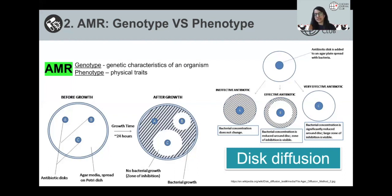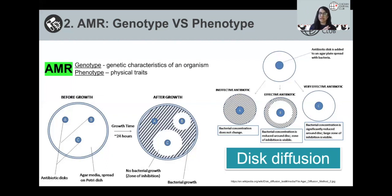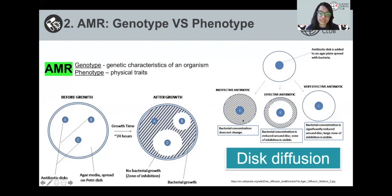The two main testing methods are: first, MIC, or minimum inhibitory concentration — the lowest concentration of antibiotic that inhibits the growth of a given strain of bacteria. The second method is disc diffusion. An effective antibiotic will produce a large zone of inhibition. We can see examples A, B, and C representing different types or strengths of antibiotics. Disc A shows an ineffective antibiotic, B is effective, and C is a very effective antibiotic. These methods are used to detect phenotypic resistance and clinical testing is based on them.